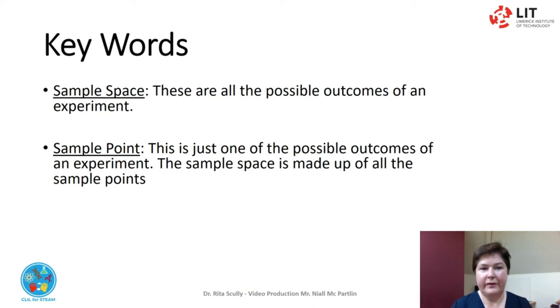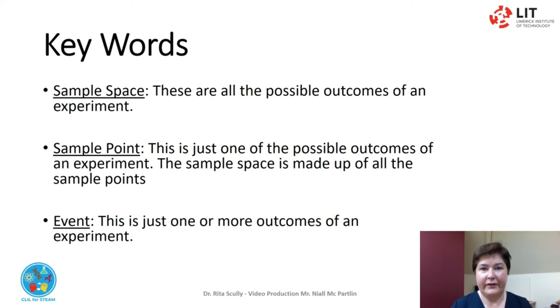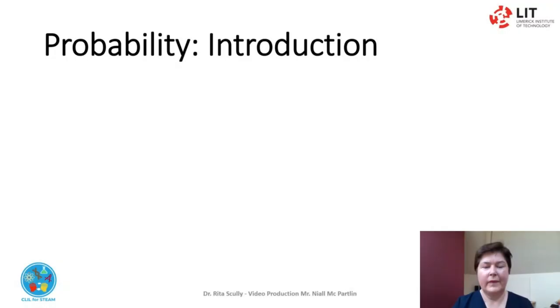The sample space is made up of all the sample points. Event: this is just one or more outcomes of an experiment. Whenever we are unsure about the outcome of an event, we talk about the probability of certain outcomes — how likely they are to occur. Probability is the numerical description of how likely something is to occur, or how likely a suggestion is true.